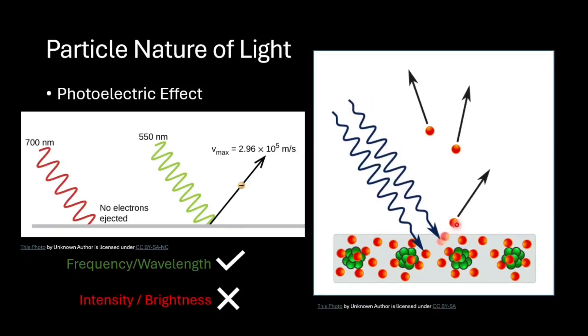Therefore, even a dim light of sufficient wavelength is sufficient to eject electrons and cause photoelectric effect. Whereas, even if we have a bright light shining for a long time on the metal surface, no electrons are ejected.